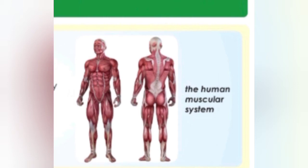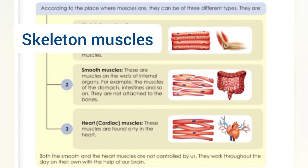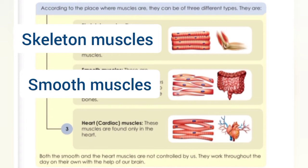Muscles have been divided into three categories based on their location in our body. The first one are skeletal muscles. These are attached to the bones — they pull the bones to make movement of hands and legs. We can control these muscles. It is because of these muscles that we can move various parts of our body like hands and legs. Next we have smooth muscles — these are muscles on the walls of internal organs, for example the muscles of the stomach and intestine.